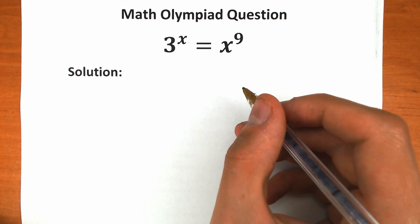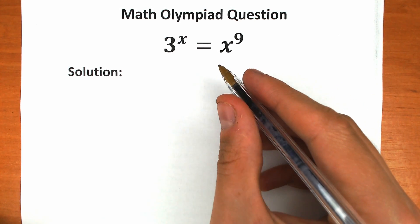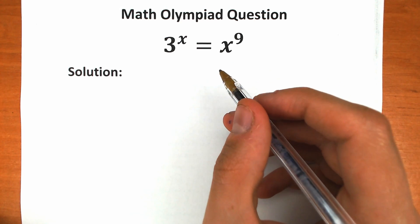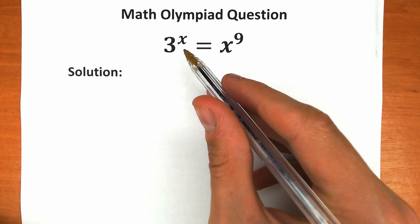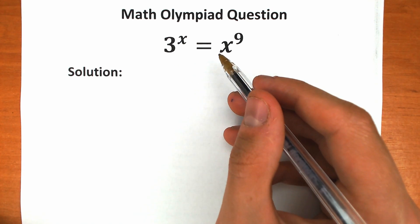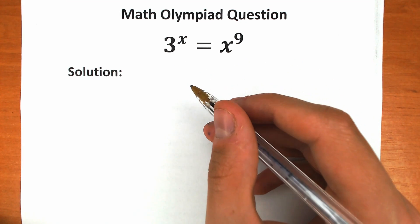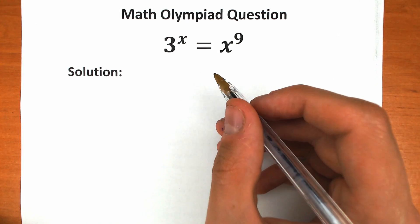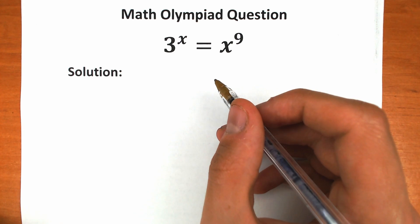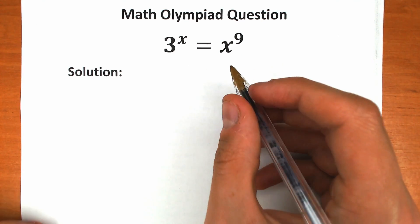Welcome back to my channel, Higher Mathematics. Happy to see you here. In this video we will solve a really interesting exponential equation: 3 to the x equals x to the power 9. There are two methods to solve this challenge, and this is my first interpretation of this really interesting question.